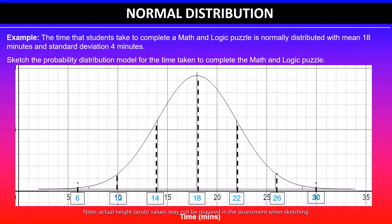I would suggest you pause the video and try this yourself. In the assessment, if you are asked to sketch the normal distribution curve, start from the mean value. Then on either side of the mean, add one standard deviation. Do the same with twice the standard deviation, and within three standard deviations you should be able to capture roughly 99% of the data. Then you can sketch the graph.